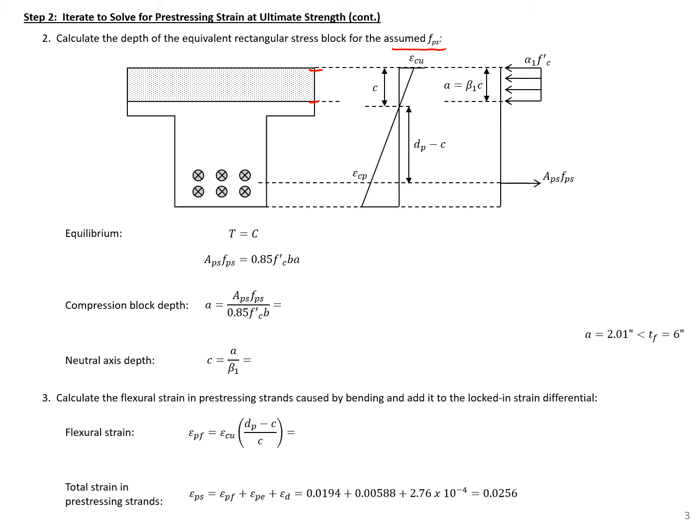We can set tension equal to compression because we have no externally applied axial forces, and then solve for A, our only unknown. And we'll get a compression block depth then equal to our strand area 0.918 square inches times our assumed stress, 267.8 KSI, divided by 0.85 times 6 KSI or concrete strength, times 24 inches, which is the width of our top flange,